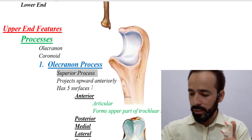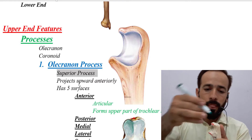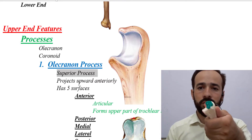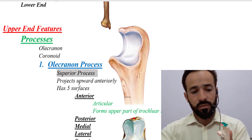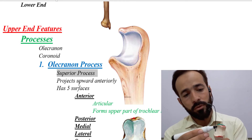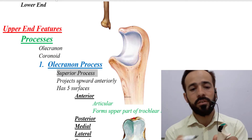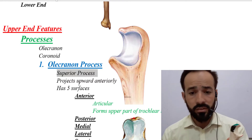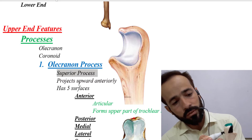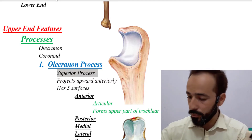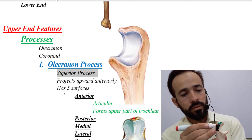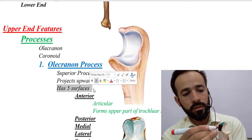The olecranon process has five surfaces: the superior surface, the medial surface, the lateral surface, the posterior surface, and the anterior surface.